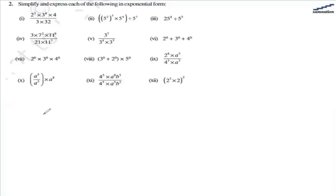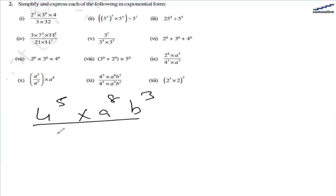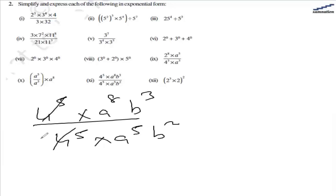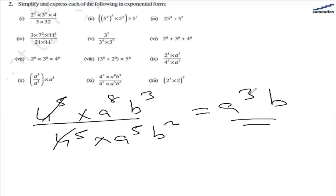In the eleventh part, we have 4 raised to the power of 5, a raised to the power of 8, and b raised to the power of 3 in the numerator, divided by 4 raised to the power of 5, a raised to the power of 5, and b squared. The common terms 4 raised to the power of 5 cancel out. For a, 8 minus 5 equals 3. For b, 3 minus 2 equals 1. So the answer is a³b.